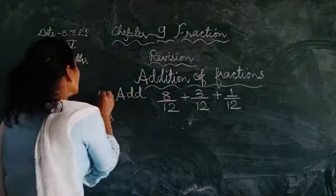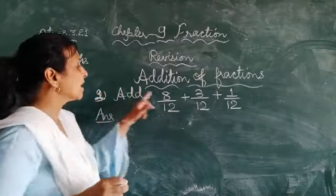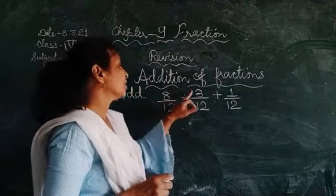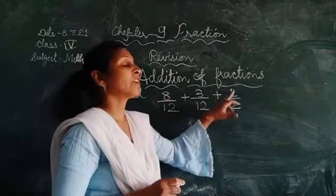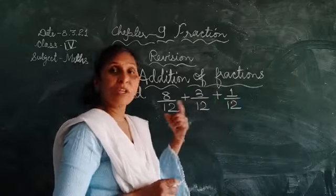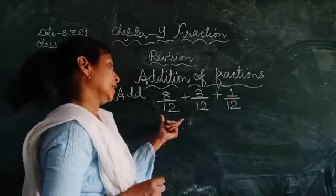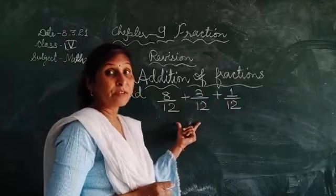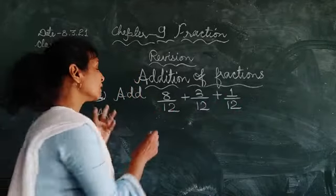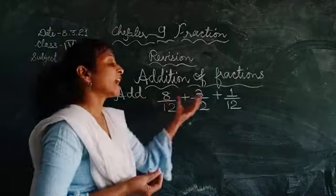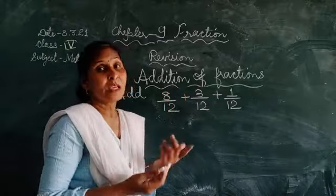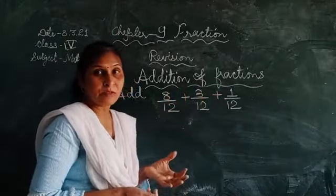So its answer is 9 upon 10. The next one you see that is add 8 upon 12, 3 upon 12 plus 1 upon 12. Yahan pe 3 fractions given hain. The like fractions are given. Jab like fractions hote hain, to see ye wohi process hai. Chahe kitne bhi aage fractions given ho.